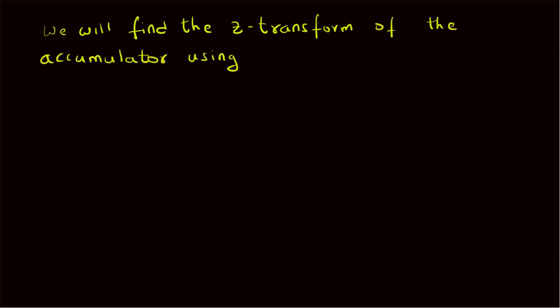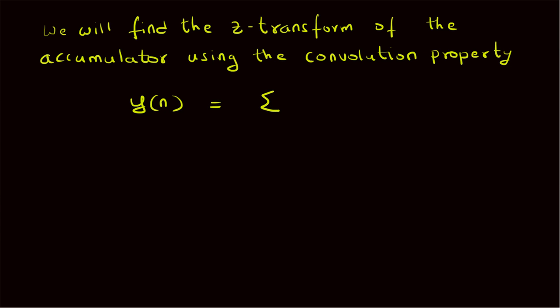Hello, welcome. In this short video, let us look at the Z-transform of an accumulator using the convolution property. Given the system function y(n) = summation from k = -infinity to n of x(k), that is the system equation for the accumulator, we want to find the Z-transform of the output y(n) in terms of the Z-transform of the input x(n). This summation from k = -infinity to n of x(k) can be rewritten as follows.